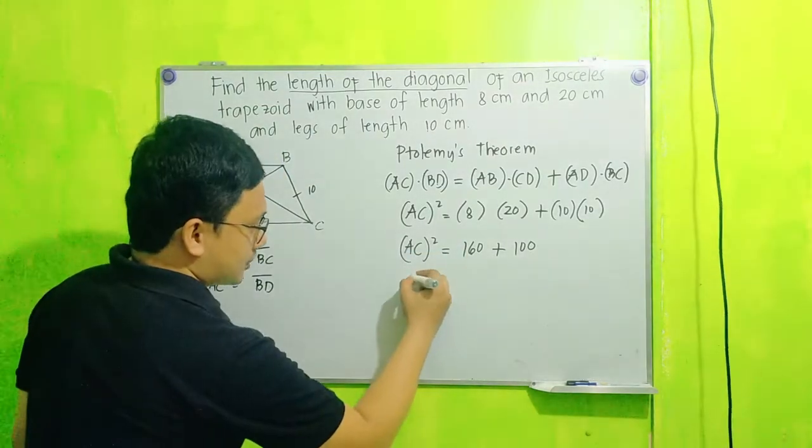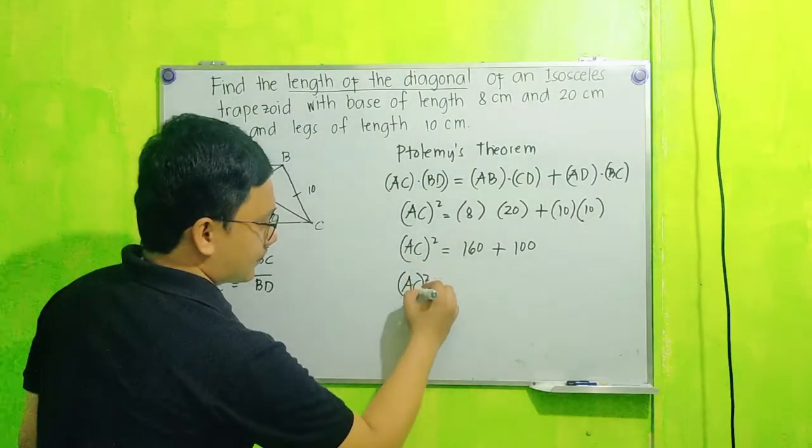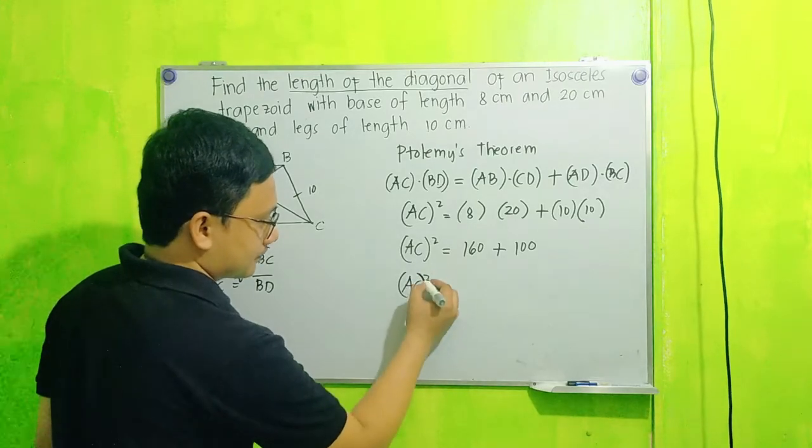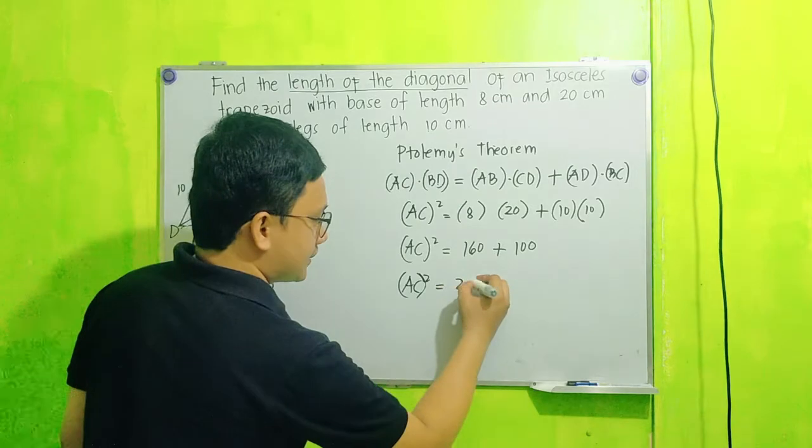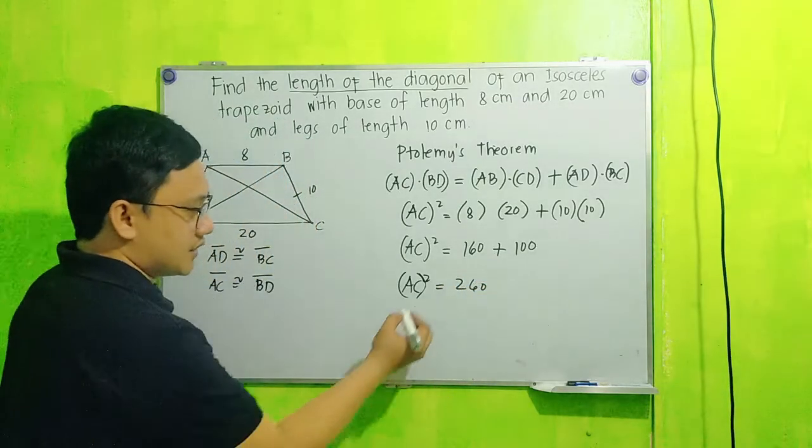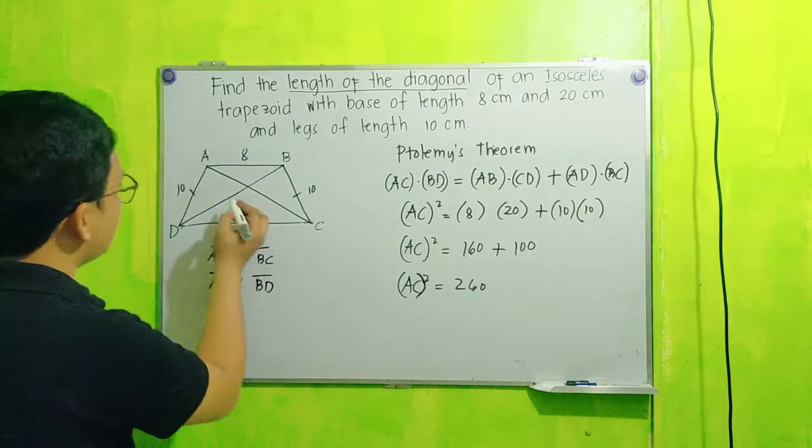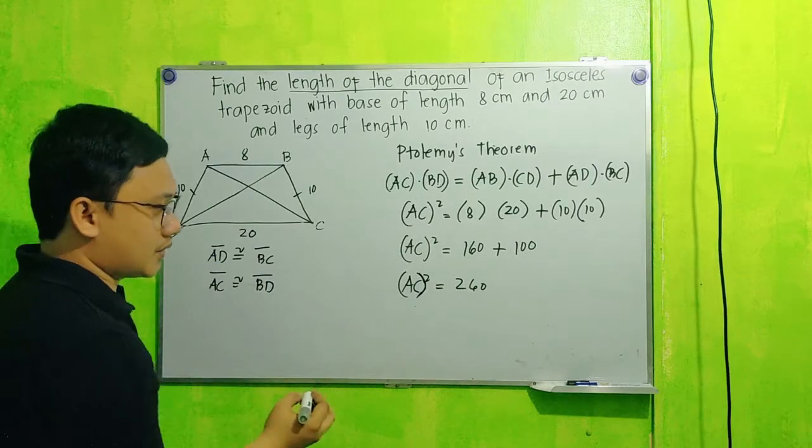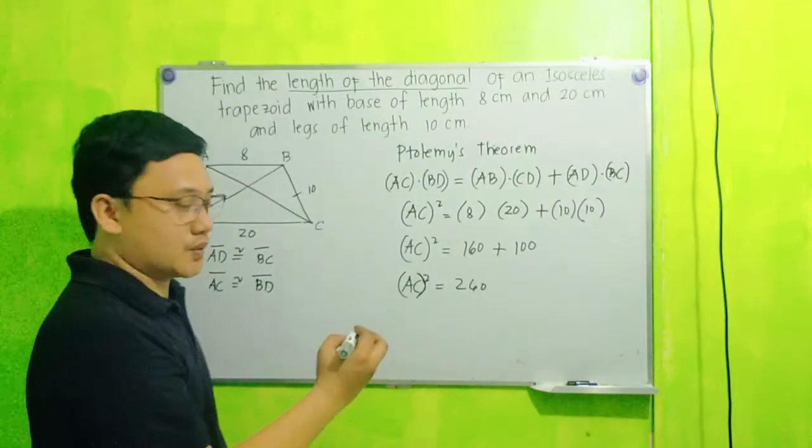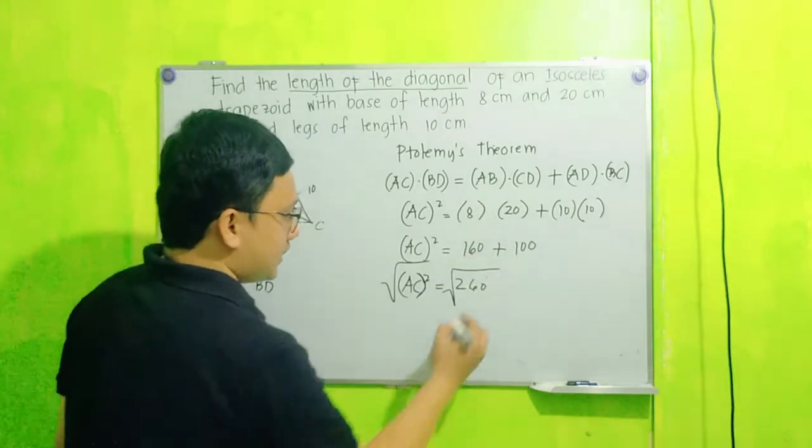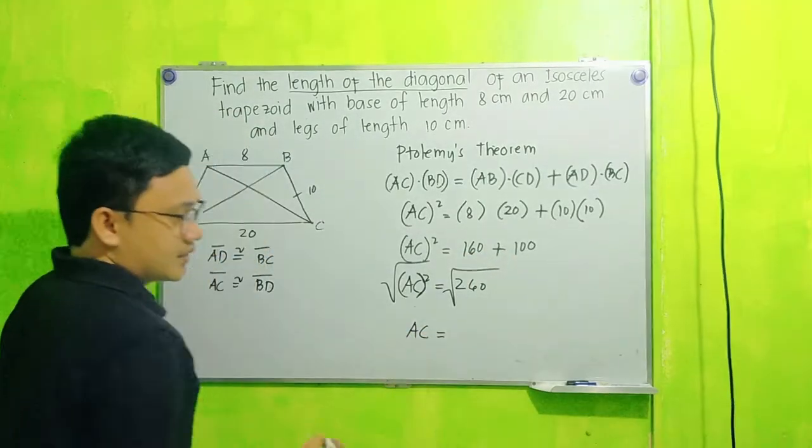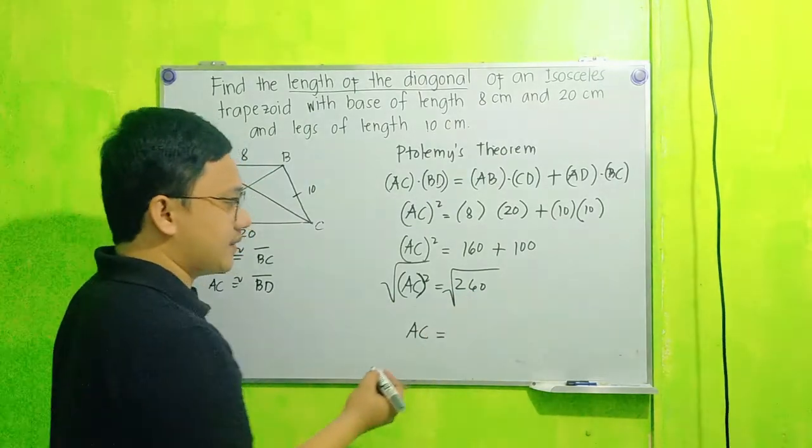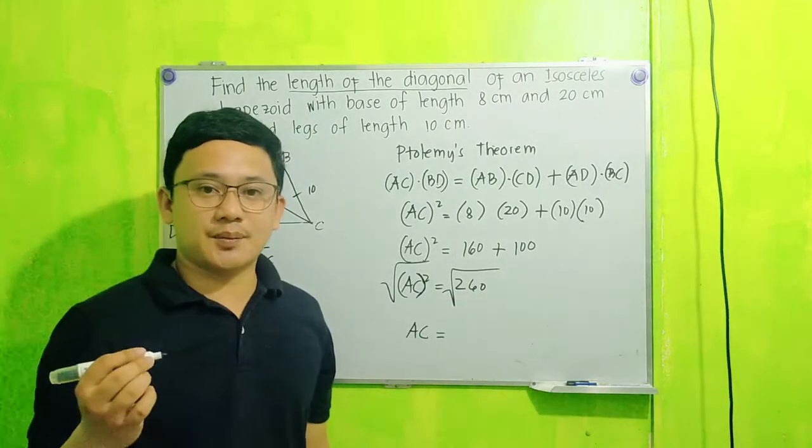So add natin yan, so square of AC is equal to 260. Since AC lang yung hanapin natin dyan, so we are going to extract square root on both sides. So this is AC now is equal to square root of 260. 260 is not a perfect square.